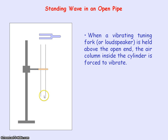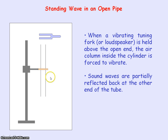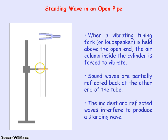At the other end of the pipe the sound wave is being partially reflected back down the pipe. So you have two progressive waves of the same frequency traveling in opposite directions — the incident sound wave generated from the tuning fork and the reflected sound wave — interfering to produce the standing wave inside the pipe.